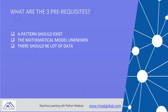The third prerequisite is there should be lots of data. If there is not a lot of data, then machine learning will not work. So these three conditions — a pattern existing in the data, the pattern not known to human beings as a mathematical formulation, and a lot of data representing the thing you're trying to study — all three must be true for you to apply machine learning.